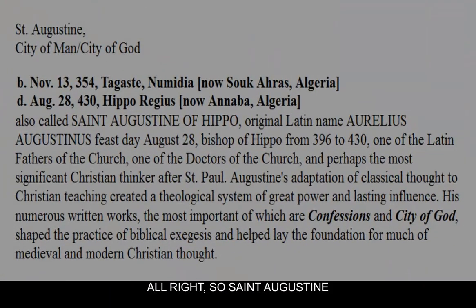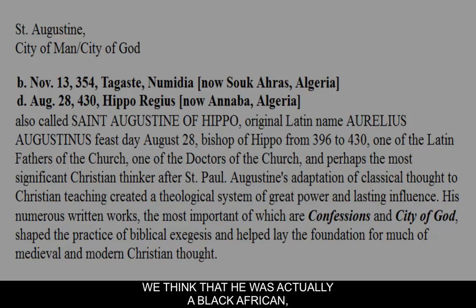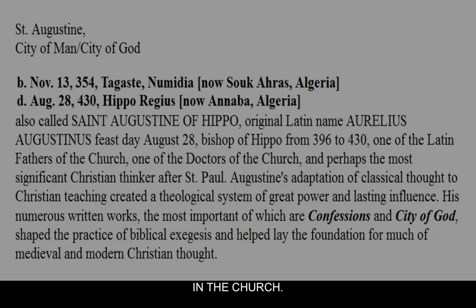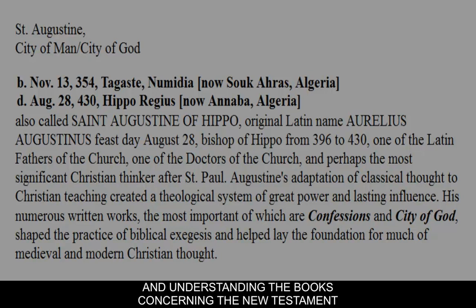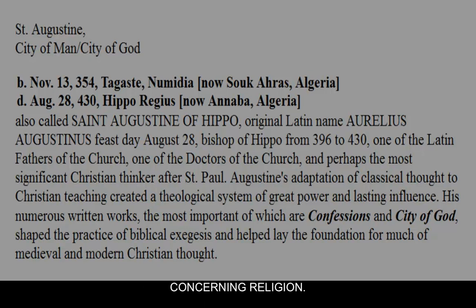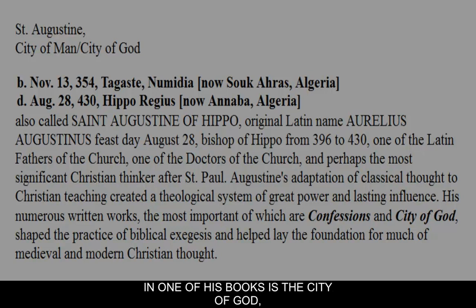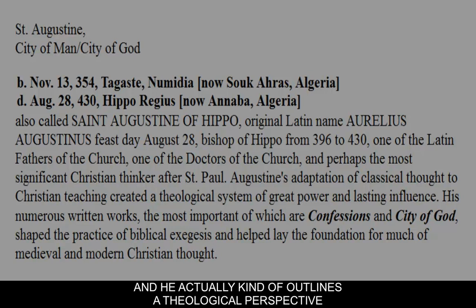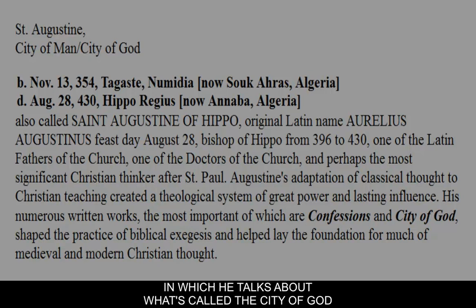There's a theological perspective in terms of this division that has to do with an Augustinian interpretation. St. Augustine was a theologian who lived around 354 — thought to have been a Black African — and was a great philosopher in the church who wrote a series of treatises on the New Testament and religion. One of his key works is the City of God, where he outlines a theological framework discussing what's called the City of God and the City of Man.